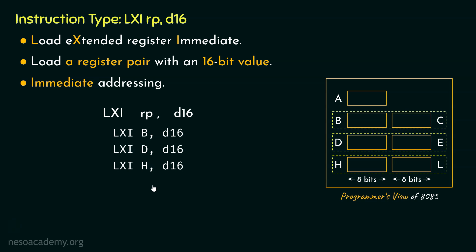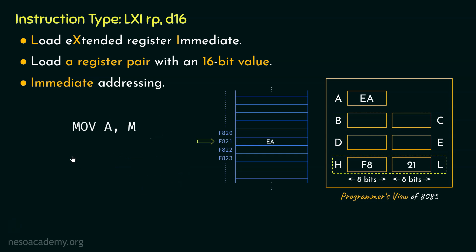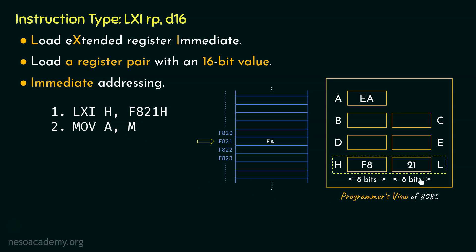Let's get back to our problem. We can solve the storage space problem with this instruction. Before MOV A,M, instead of performing two separate MVI instructions, we could use the instruction LXI H,F821H. We are now using only two instructions instead of three. Using LXI H,F821H, the HL pair gets the value F821 immediately — 21, the lower order byte, is loaded into register L, and F8, the higher order byte, is loaded into register H. Basically, L register is used as an extension of the H register, as specified by this instruction.